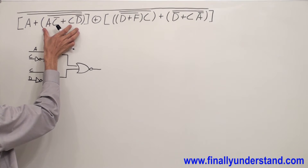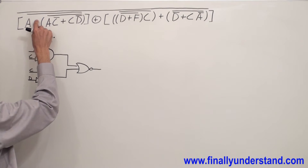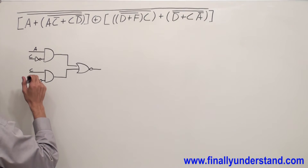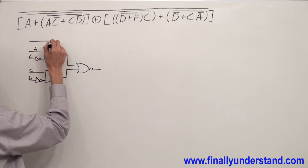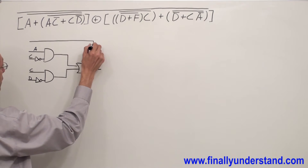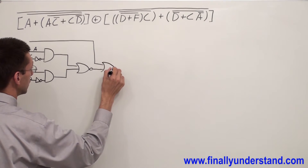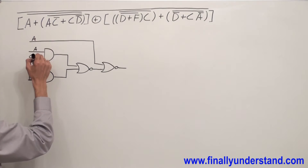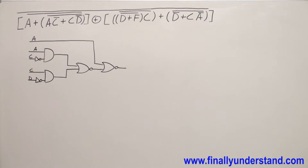Why NOR? Because I have a bar over the parentheses — bar over OR — so that's why this is NOR. This expression is NORed with A. Why? Because I have a bar over OR, and I have A over here, so I'm going to add my A input to the NOR gate.